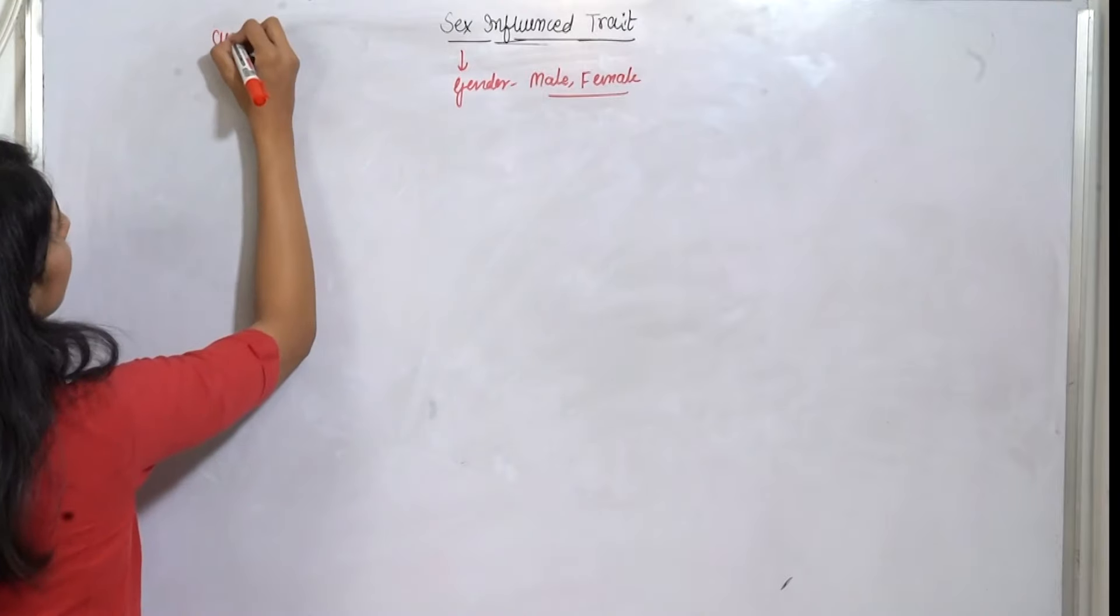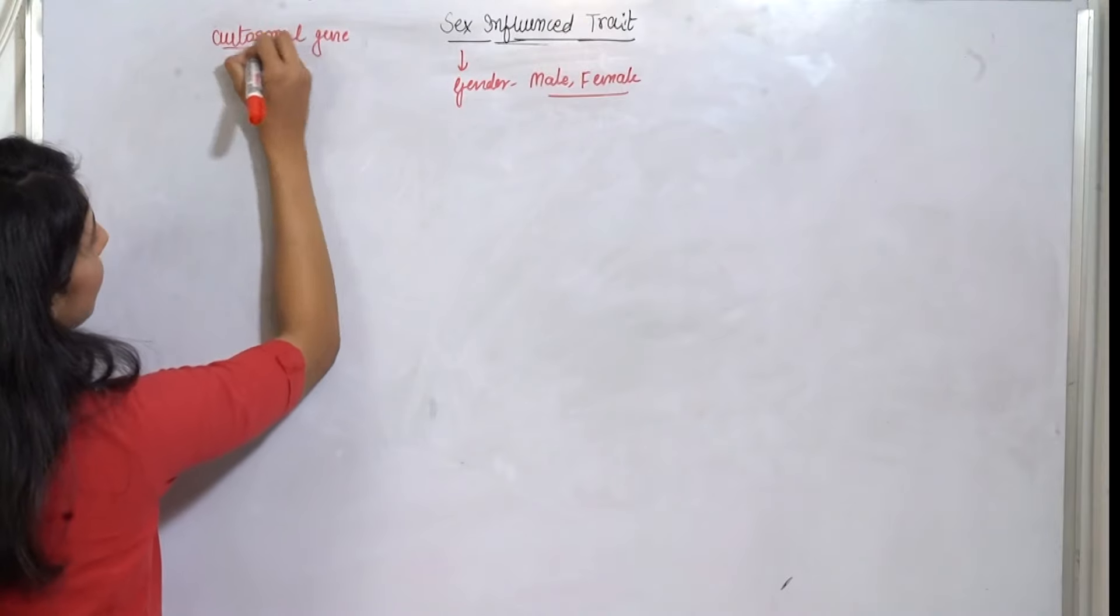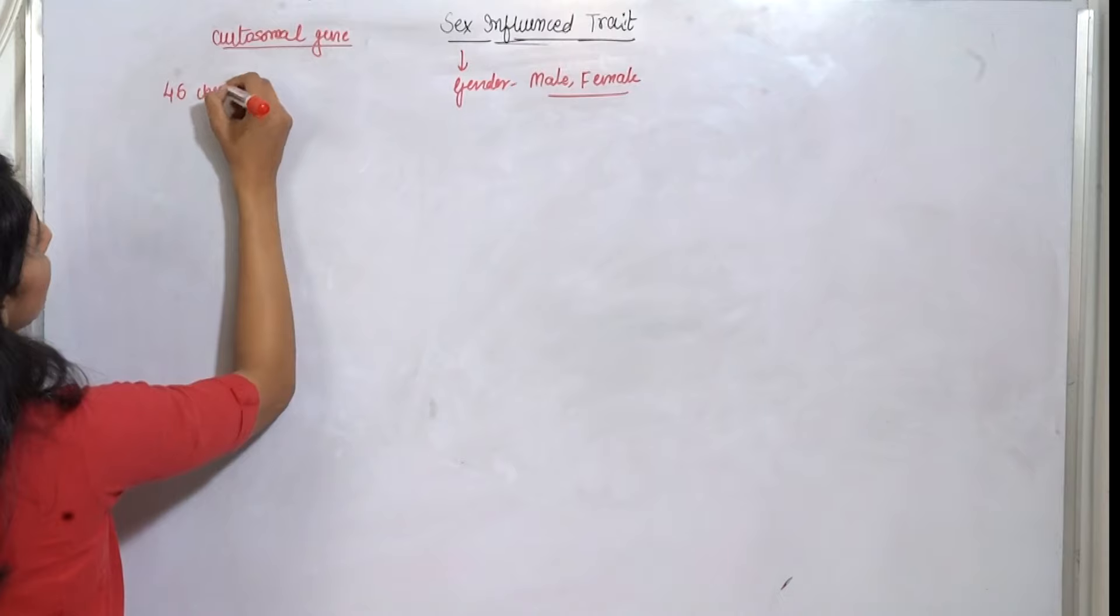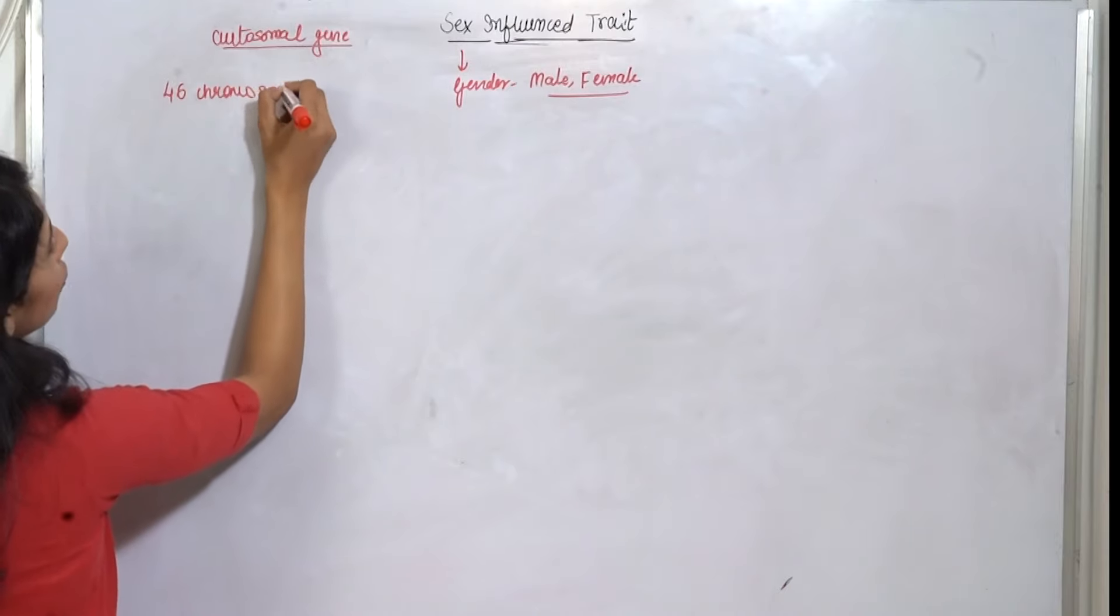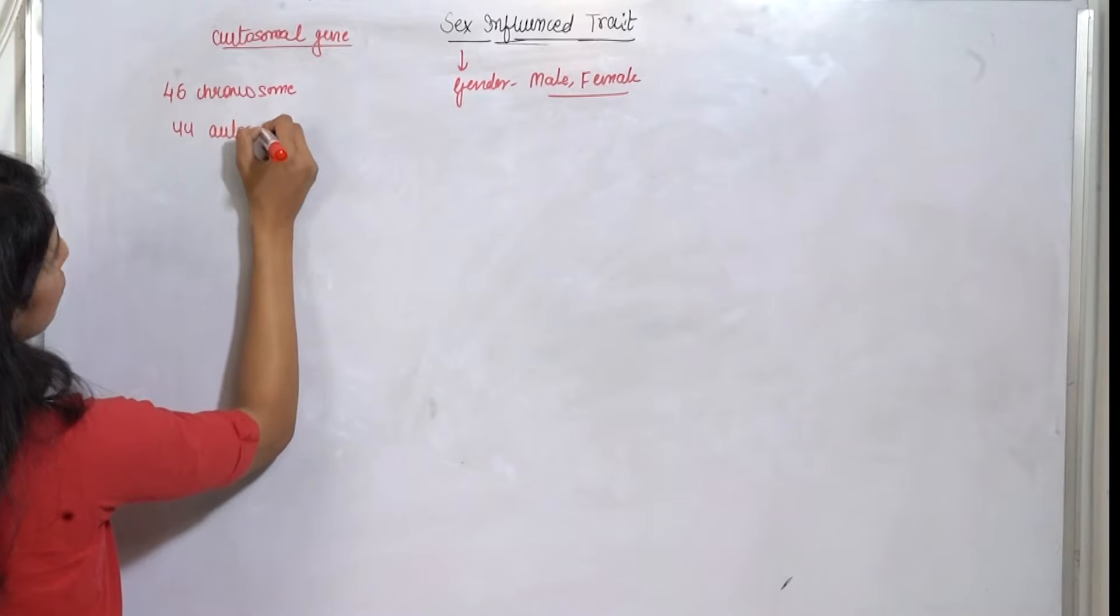First of all, if we look here, it depends on what is present. It is called autosomal gene. Autosomal gene means what? Humans have 46 chromosomes. In 46, 44 chromosomes are autosomal chromosomes and 2 chromosomes are sex chromosomes.